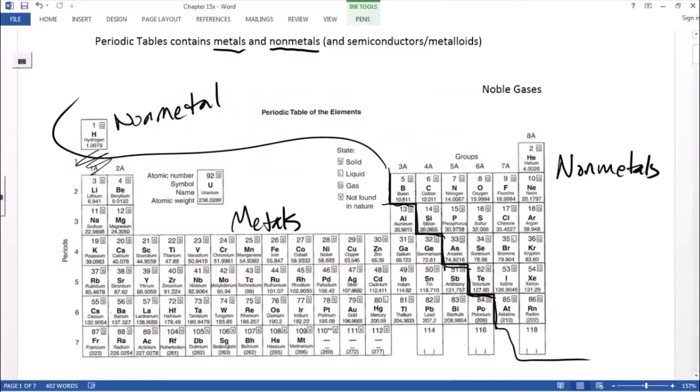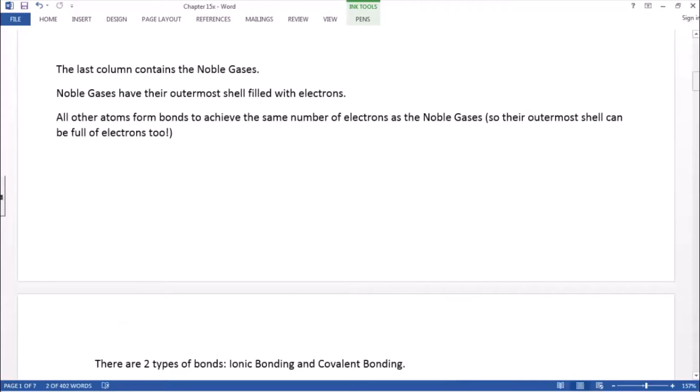Now, the last column of the periodic table contains the noble gases. That's this column right here. And it turns out that noble gases are really special. It's a good name, noble. It means nobility, majestic, something special. And it turns out those atoms have their outermost shell filled with electrons. They're incredibly stable. They rarely form bonds. They usually exist as single atoms.